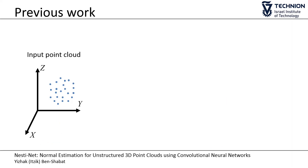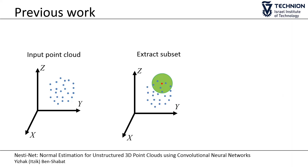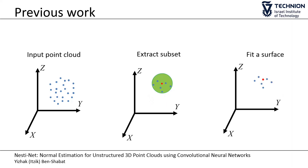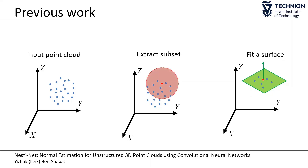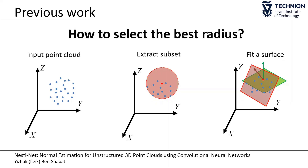Classic methods for normal estimation first extract a subset of points within a given radius and then fit a parametric surface to each point and its neighbors. PCA, for example, finds an orthogonal basis that best represents a given set of points and essentially approximates a local plane. Selecting different radii may result in different normal estimations. Therefore, the first challenge is how to select the best radius.